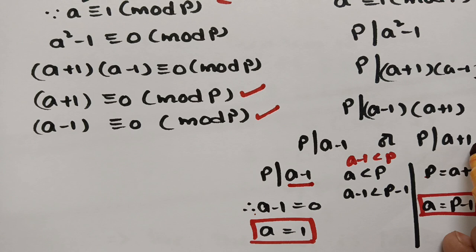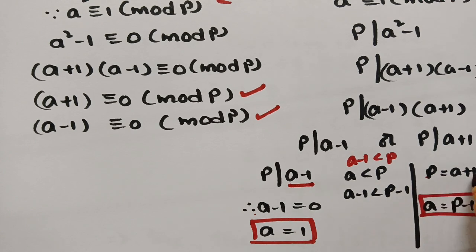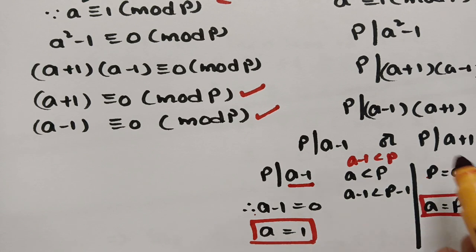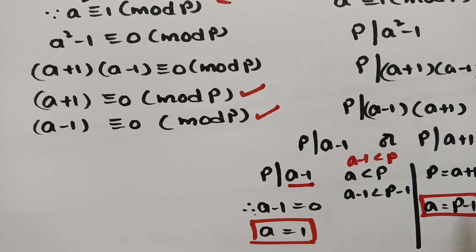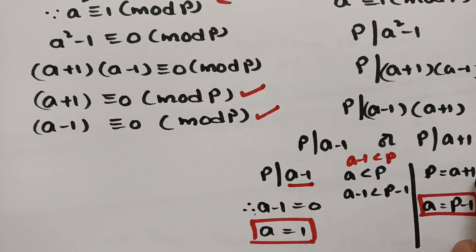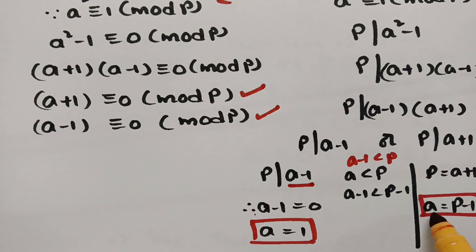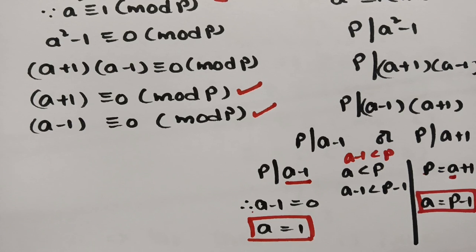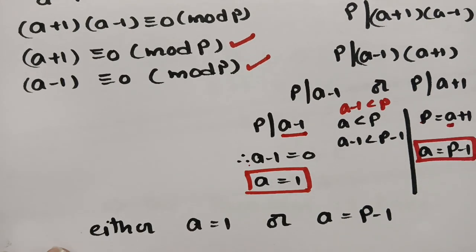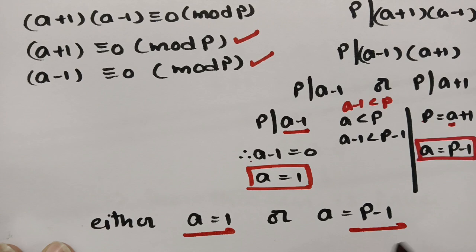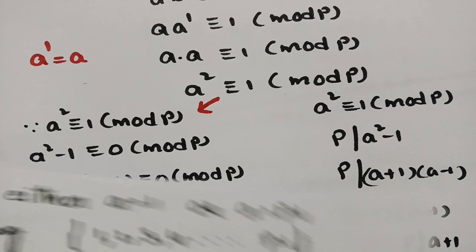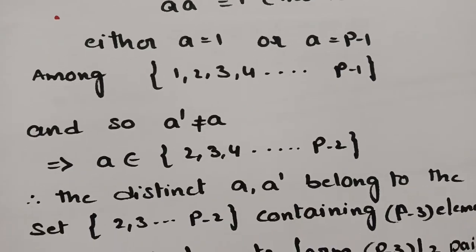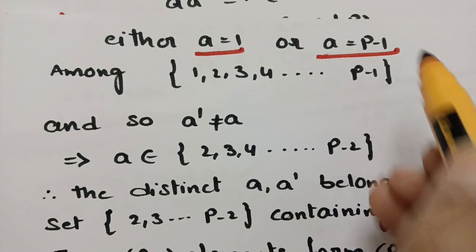For the other case, p divides a+1, so p = a+1, meaning a+1 = p. Therefore a = p−1. So we have found that a must be either 1 or p−1. These are the only two values among 1, 2, 3, …, p−1 for which a' = a (i.e., the element is its own inverse).